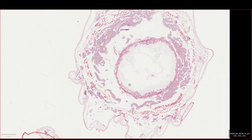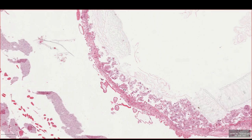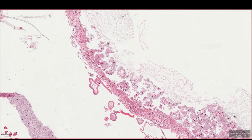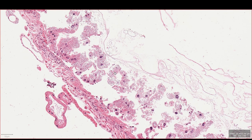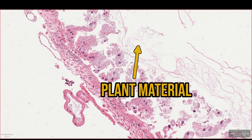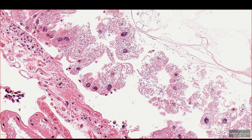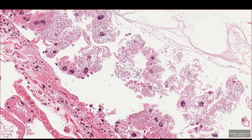Let's zoom in first on the intestine and see what was going on there. One of the first symptoms was inappetence, so an intestinal disease might be a good place to look. In the lumen there's plenty of plant material, but the cells lining the intestine — the epithelium — are not looking too hot.